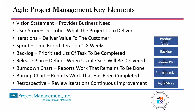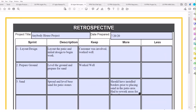Then we do the retrospective — looking backward at what we did in that iteration: what we want to keep, what we want to do more of, and what we want to do less of. I've listed three different sprints, gave a description of each, and identified areas that worked well and areas I wanted to improve. There were no areas I wanted less of. That would be your retrospective.